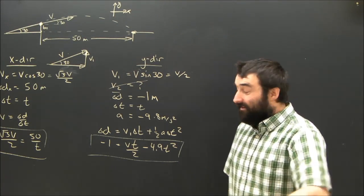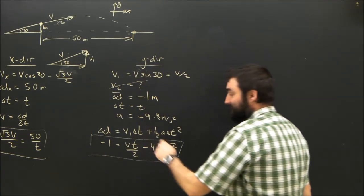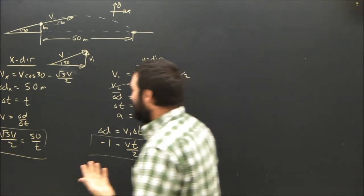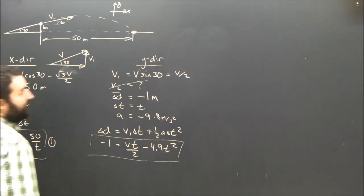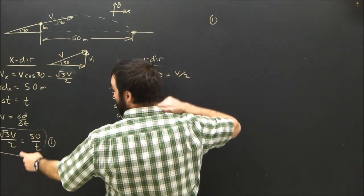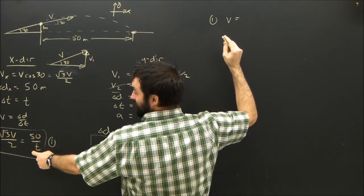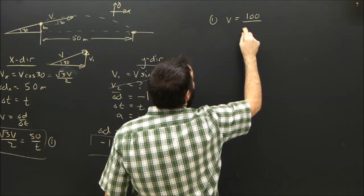So now it's just a matter of doing a little bit of work. The most direct method would probably be to rearrange this equation for t and substitute it into here and get your velocity. But it turns out in this case, it's just a little simpler to solve t first. So I'm going to take equation one here and I'm going to rearrange it for v.